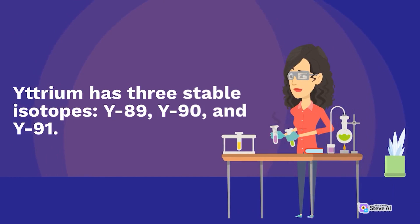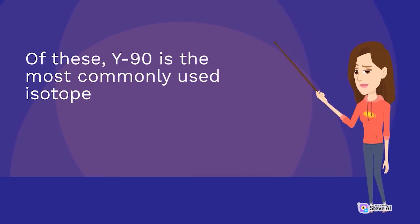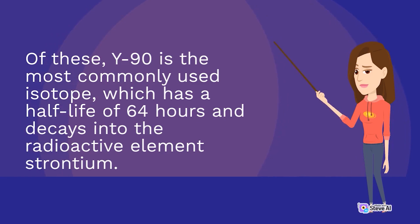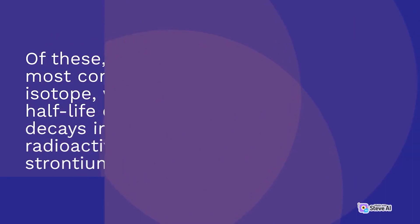Yttrium has three stable isotopes: Y89, Y90, and Y91. Of these, Y90 is the most commonly used isotope, which has a half-life of 64 hours and decays into the radioactive element strontium.